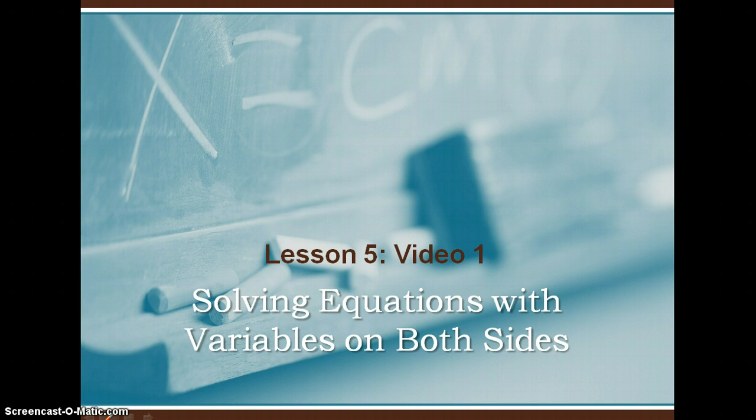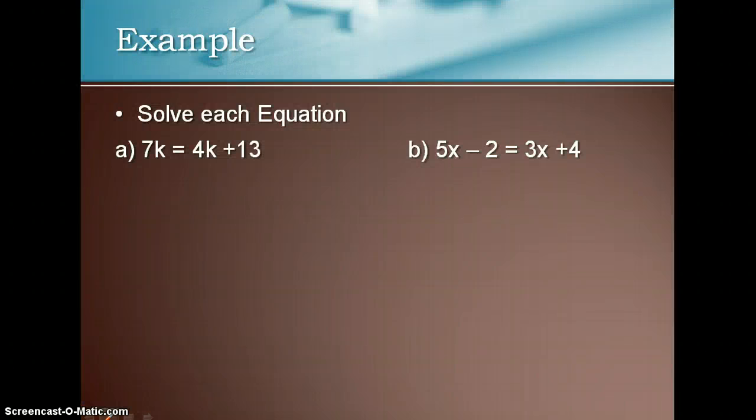Again, this is Lesson 5, Video 1, Solving Equations with Variables on Both Sides. The example for the first one is 7k equals 4k plus 13. The key to solving these is to remember that you want to get the variables to the left and the constants to the right.